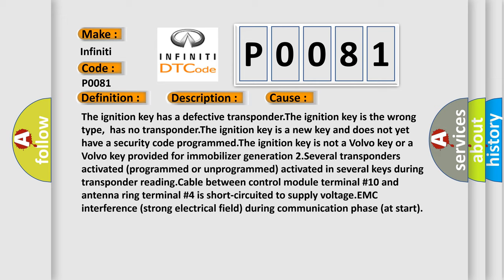ignition key is not a Volvo key or a Volvo key provided for immobilizer generation 2. Several transponders activated, programmed or unprogrammed, activated in several keys during transponder reading. Cable between control module terminal number 10 and antenna ring terminal number 4 is short-circuited to supply voltage. EMC interference, strong electrical field, during communication phase at start.